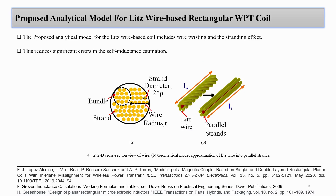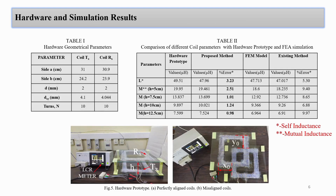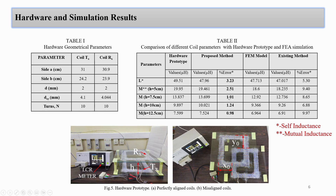The proposed analytical method for Litz wire based coils includes wire twisting and stranding, which reduces significant error in self inductance estimation. From the hardware and FEA simulation results, we can see the proposed method reduces error up to three percent for self and mutual inductance. These are the results for the coil with the ferrite core.